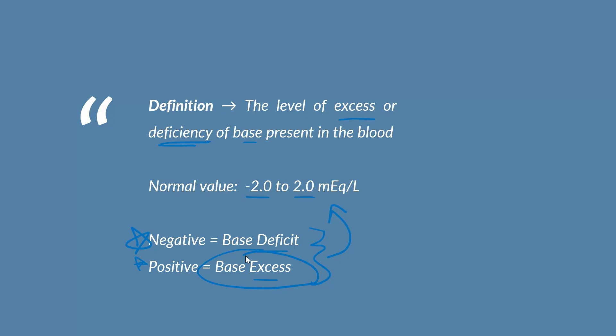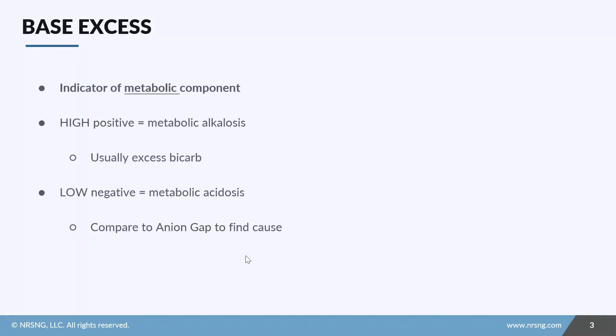The meaning of the base excess value is that it is a strong indicator of the metabolic component of acid-base balance. A high positive level, in other words a level greater than positive two, indicates metabolic alkalosis. This means we have extra base in our blood, most commonly an excess of bicarbonate.